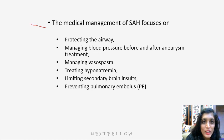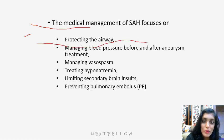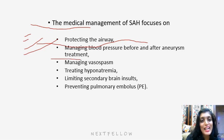Regarding medical management of subarachnoid hemorrhage: the GCS of the patient is typically very low, so it is very important to protect the airway. Blood pressure must be managed before and after aneurysm treatment, as high BP increases the chances of re-bleed. It is also important to manage vasospasm, treat hyponatremia — mostly due to SIADH — limit secondary brain insults, and prevent pulmonary embolus.